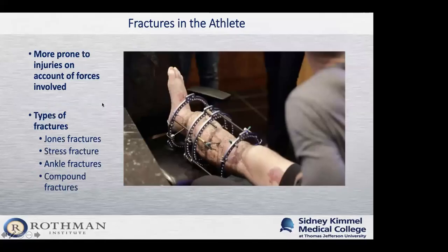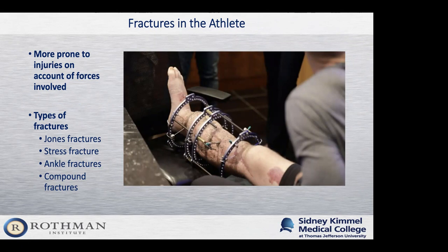Moving on to foot and ankle fractures. Fractures can happen to anybody, but athletes are particularly prone because of the tremendous forces involved — they're usually larger and more muscular, and doing things that inherently put the ankle at risk. Fractures we see include Jones fractures, stress fractures, ankle fractures, and compound fractures — which come out to the skin, bringing risks of infection, damage to surrounding muscle, and even potential for amputation if the injury is severe enough.